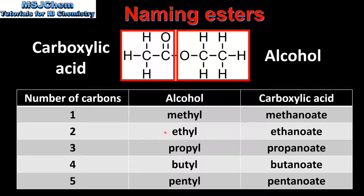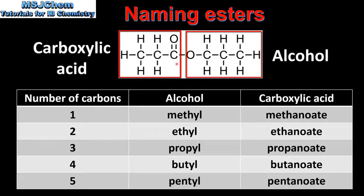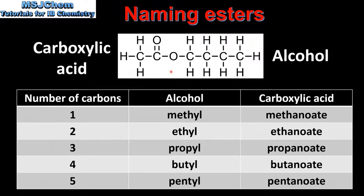The alcohol part comes first, therefore this ester is named ethyl ethanoate. In our next example, the alcohol part of this ester has three carbon atoms in the longest chain, and the carboxylic acid part also has three carbon atoms in the longest chain. From the table, the alcohol name changes to propyl and the carboxylic acid name changes to propanoate, so the name of this ester is propyl propanoate. In the last example, the alcohol part has four carbon atoms and the carboxylic acid part has two carbon atoms, so the alcohol name changes to butyl and the carboxylic acid name changes to ethanoate, giving the name butyl ethanoate.